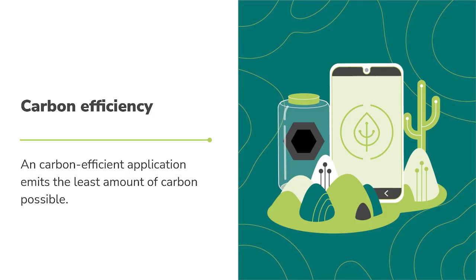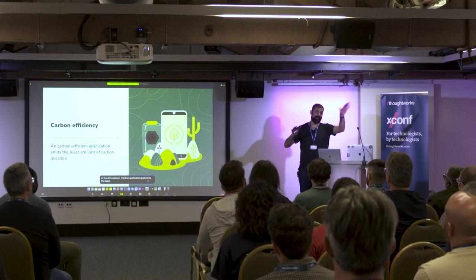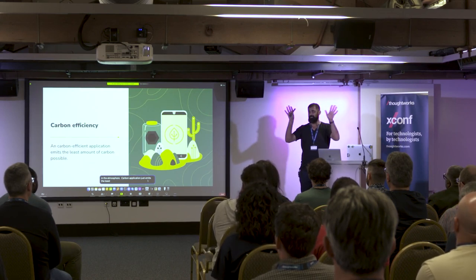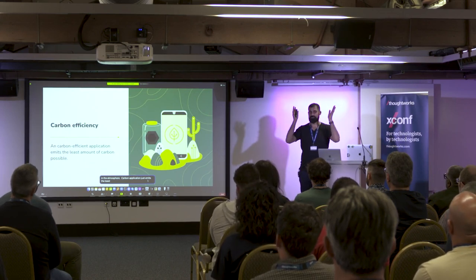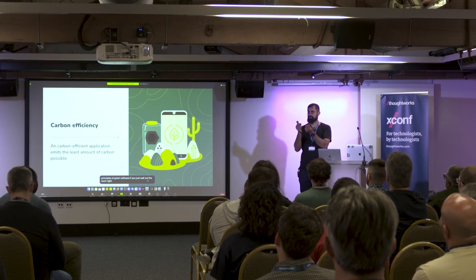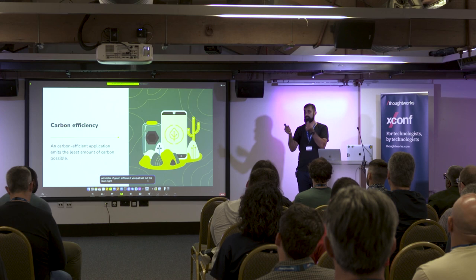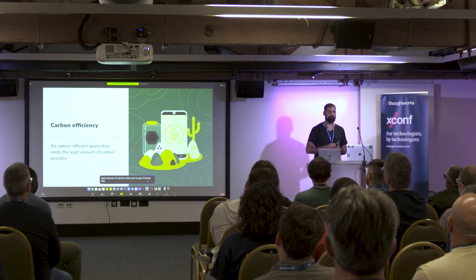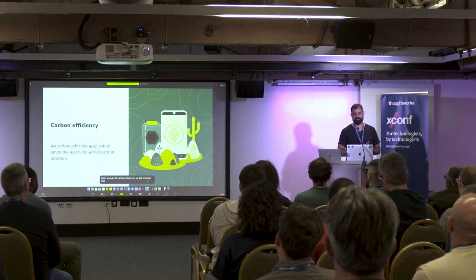A carbon efficient application just emits the least amount of carbon possible. That is one of the first principles of green software. If you walk out of the room right now, that's your North Star — just emit the least amount of carbon. When you've got choices and you can think, this choice emits less carbon than this choice, that's good enough. You can walk off and just make that decision.